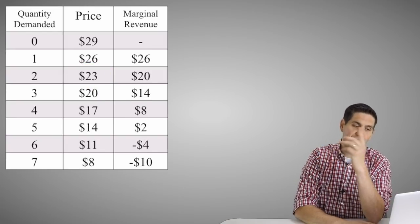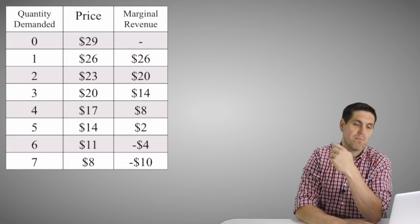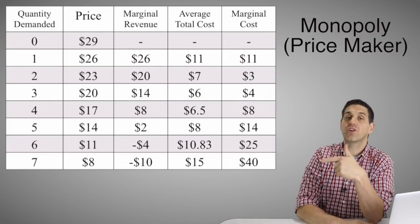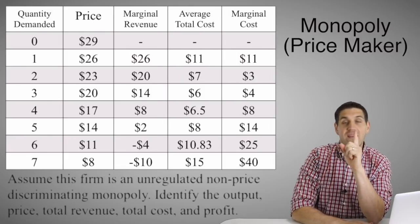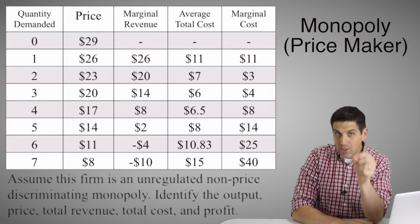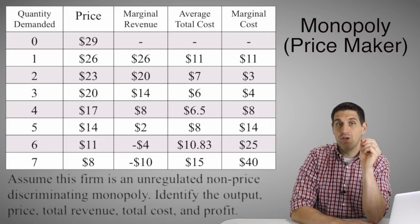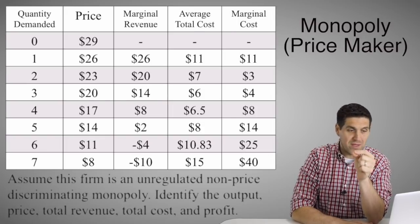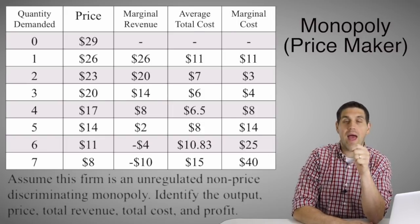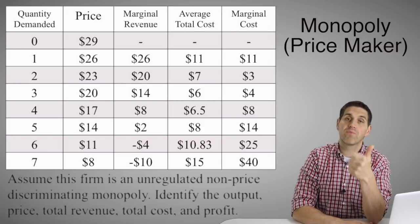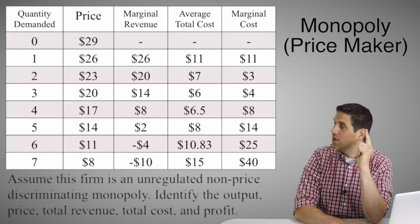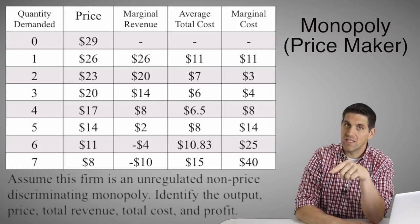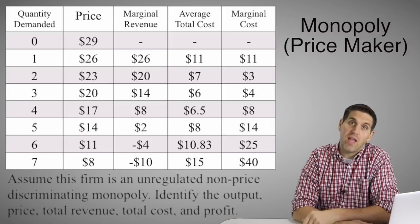Now that we have the price and the marginal revenue, along with the cost curves, here's your question: if this is an unregulated, non-price-discriminating monopoly, figure out how much is the output, the price, total revenue, total cost, and profit. Try it on your own — pause the video. Good luck.